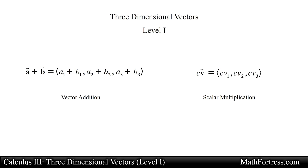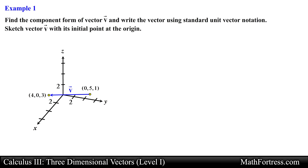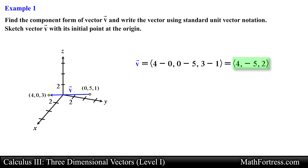Let's go over some examples. Find the component form of vector v and write the vector using standard unit vector notation. Sketch vector v with its initial point at the origin. Here we are given the initial and terminal points of a vector. To find the component form we simply subtract the coordinates of the initial point from the coordinates of the terminal point, obtaining the components of vector v. Next we write this vector using the standard unit vectors — each component corresponds to i, j, and k respectively.